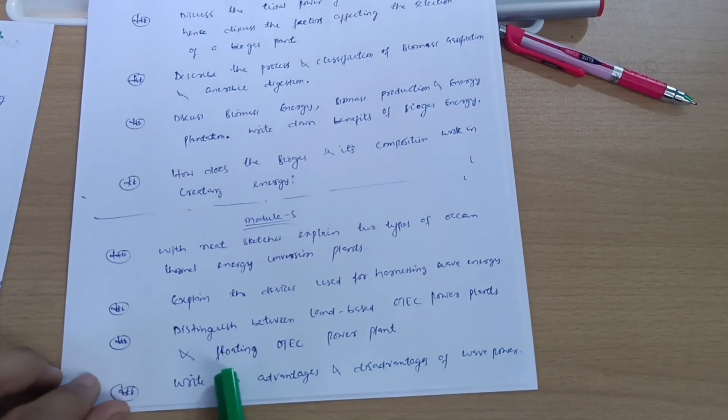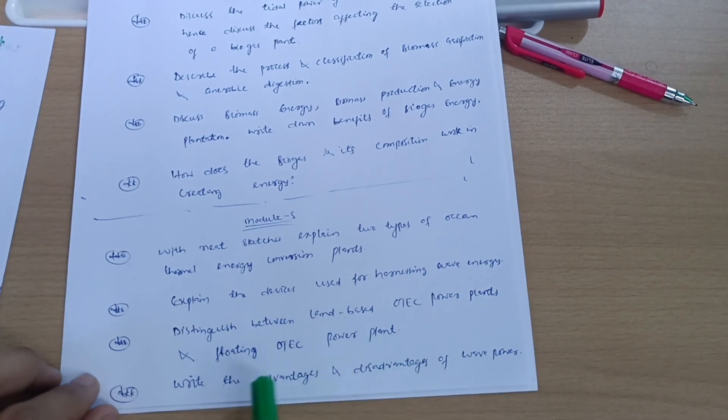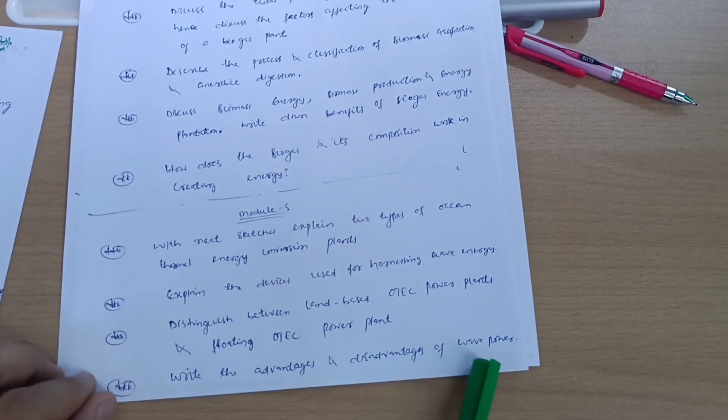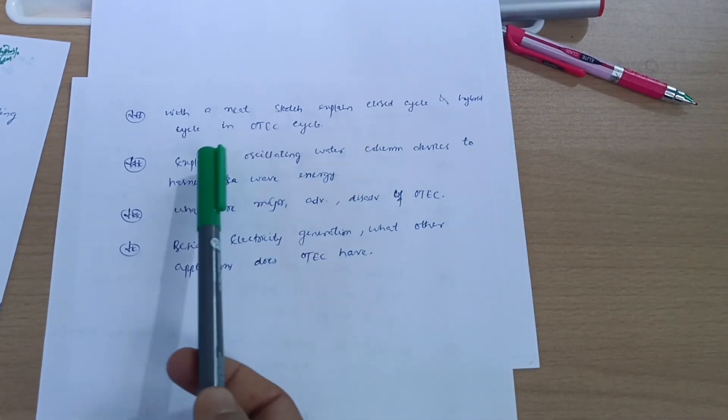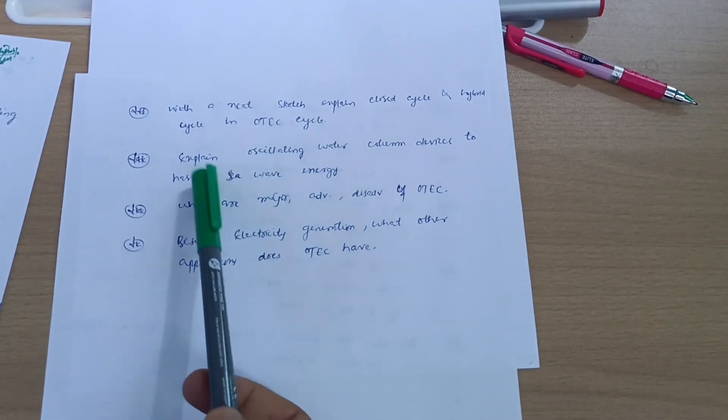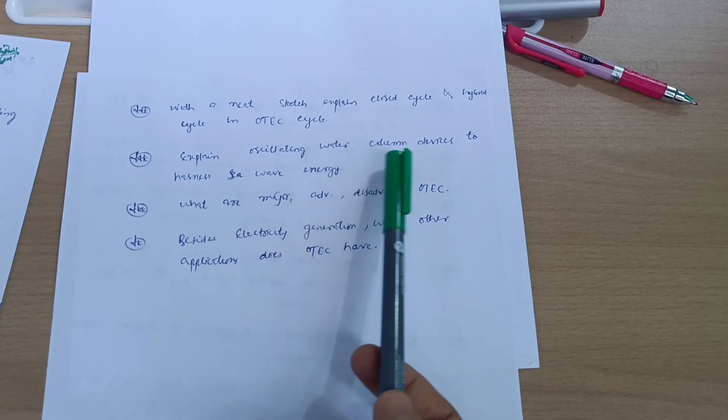Write the advantages and disadvantages of wave power. With a neat sketch, explain closed cycle and hybrid cycle in OTEC cycle. Explain oscillating water column devices to harness sea wave energy.